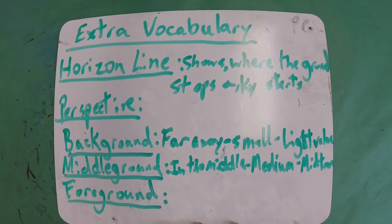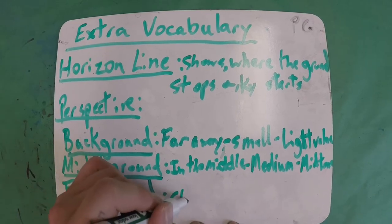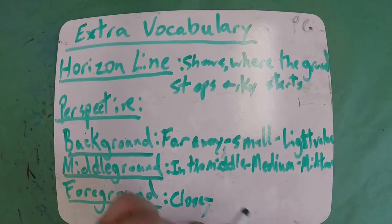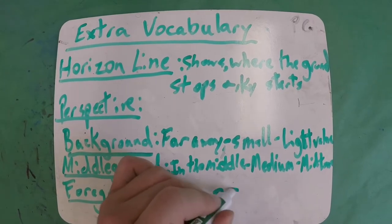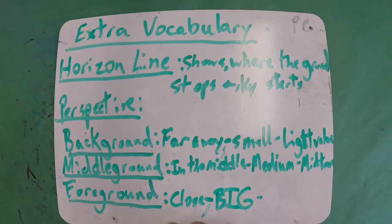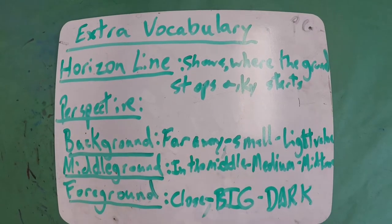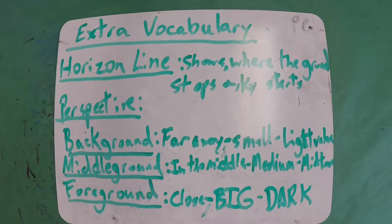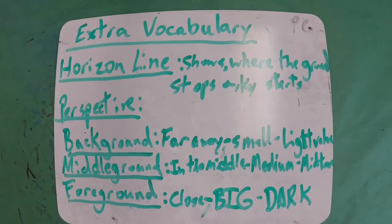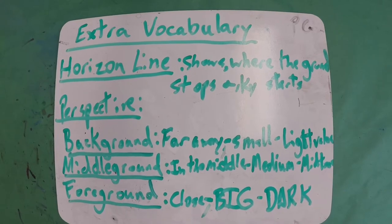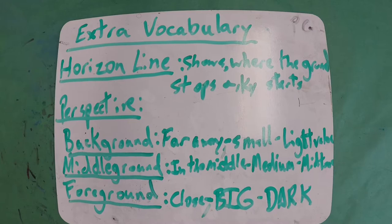And then that brings us to foreground. Things in the foreground are close to us. And because they are close to us, we draw them big. And because they're close to us and because we've drawn them big, when we color them, we use a dark value. Because as those things get closer to us, their color becomes more saturated, more vibrant. As they move away from us, those colors desaturate or become more dull and dim and less bright and vibrant. So that being said, let's go ahead and move into the drawing.